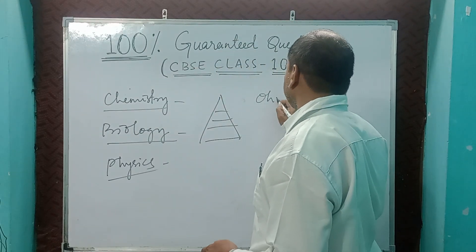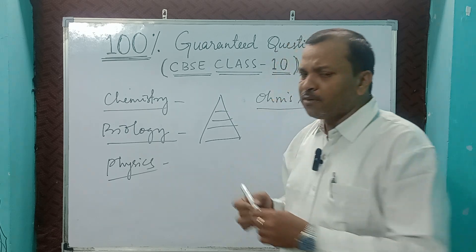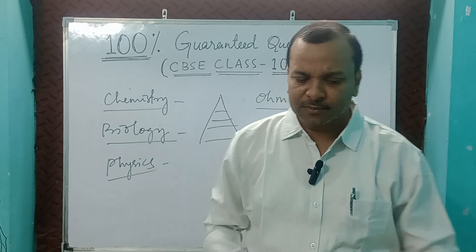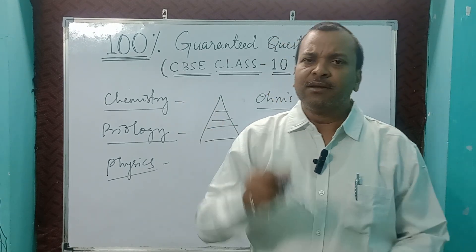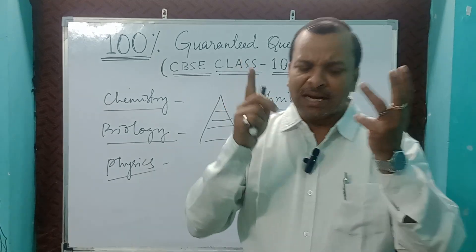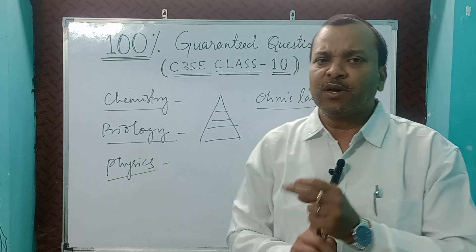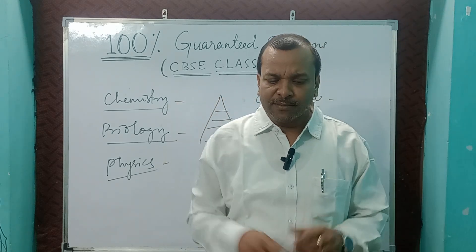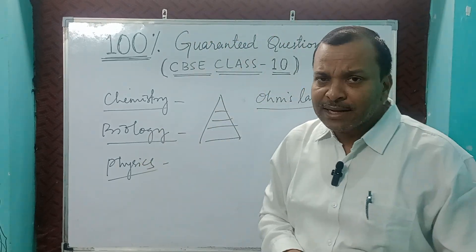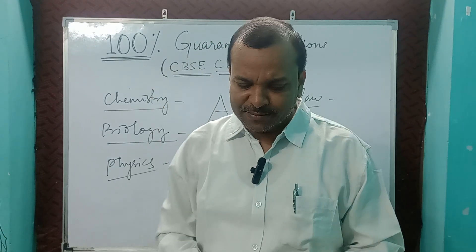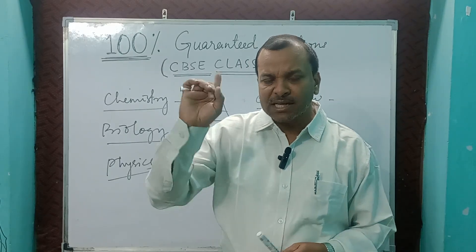Next, very important — Ohm's law. You are going to get one numerical from Ohm's law. Circuit diagram — 110 percent — you might be asked to find resistance or find the current. Guaranteed question. Next, Joule's law of heating: H = I²RT — you are going to get one question from that.